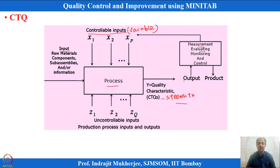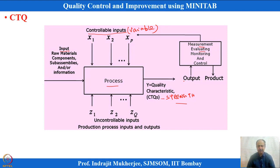At inspection, we do not measure everything — only CTQs which are important to the customer. If deviation occurs in CTQs, it affects the customer. If diameter or surface finish goes wrong, it creates problems, because it impacts customer satisfaction when the dimensions provided by the customer fail.